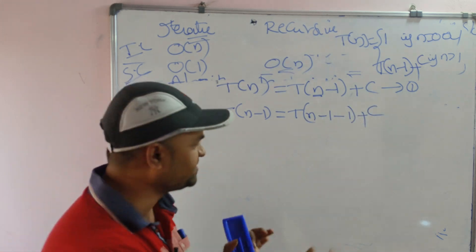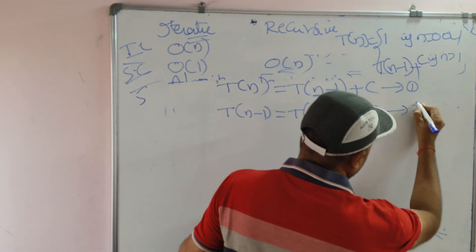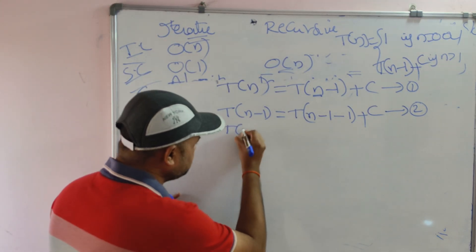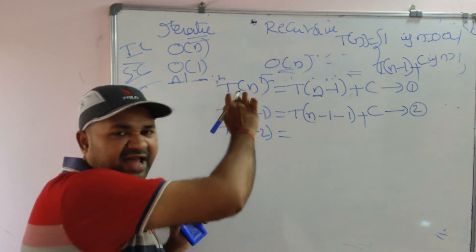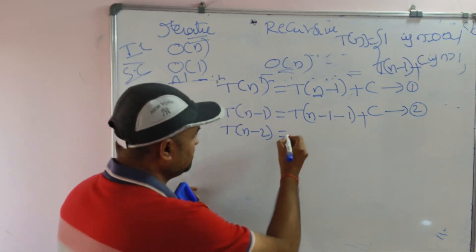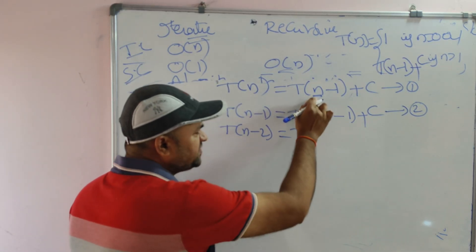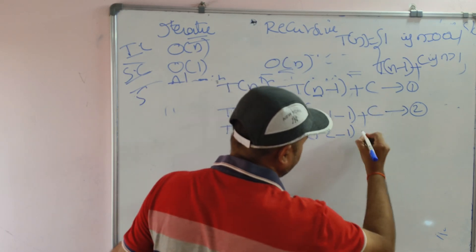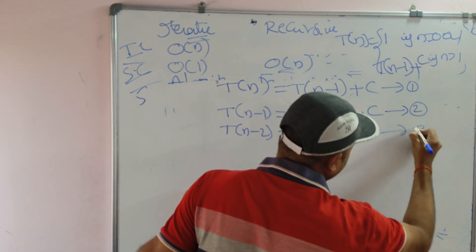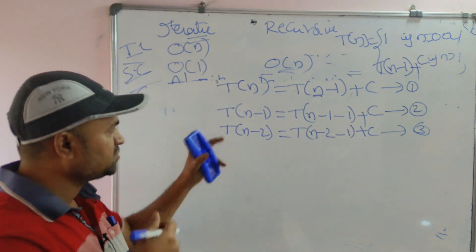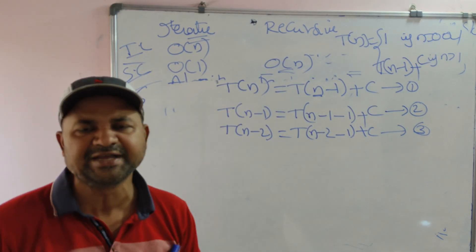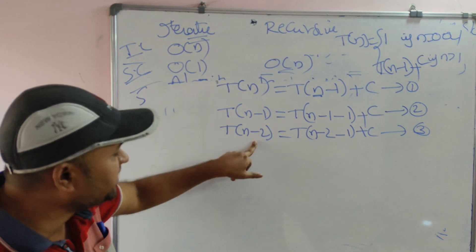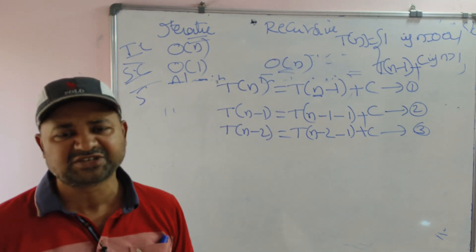Continuing the back-substitution: T(n - 2) = T(n - 3) + c. The constant does not change — keep it the same. Substituting back into Equation 1: T(n) = T(n - 1) + c = T(n - 2) + 2c = T(n - 3) + 3c. So in general, the k-th term gives T(n) = T(n - k) + kc.